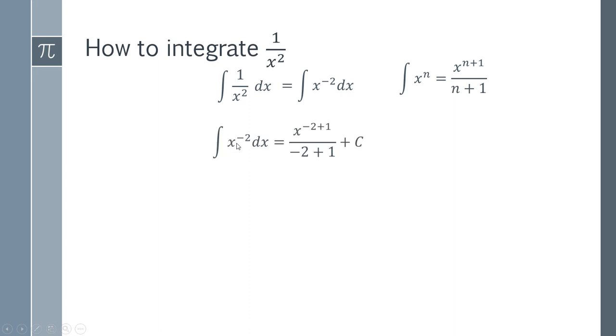So here what we're doing is x to the power of minus 2. We add 1 to the power here and then we divide by this same thing here. And that of course simplifies.